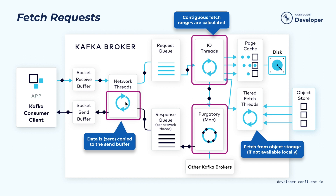From there, the network thread will pick it up to send the actual data in the response back to the client. In Kafka, we use zero-copy transfer in the network thread to transfer the range of bytes from the underlying file directly to the remote socket — this is actually pretty efficient for memory management. Normally, this process is fast because the data will still be in the page cache, and copying the data from memory to the socket buffer is fast. But sometimes, if you are accessing old data, the data may need to be retrieved from disk, which can cause the network thread to be blocked. Since the network thread is shared by multiple clients, this may delay processing for other clients. In one of the future modules, we'll talk about how the tiered storage capability is able to address this issue to provide better isolation when retrieving data from the consumer that's on disk.